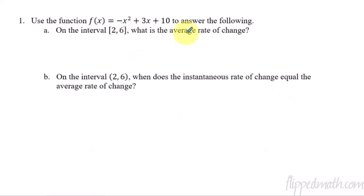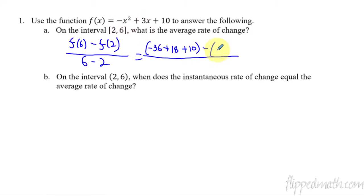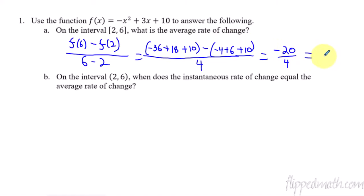So here's how we do the mean value theorem. We have the closed interval two to six, and we first find the average rate of change. That means we need f(6) minus f(2), all over six minus two — change in y over change in x. Working through the function: f(6) gives negative 36 plus 18 plus 10, and f(2) gives negative 4 plus 6 plus 10, all over 4. That simplifies to negative 20 over 4, which equals negative 5. So the average rate of change — the slope between point A and B from two to six — is negative 5.